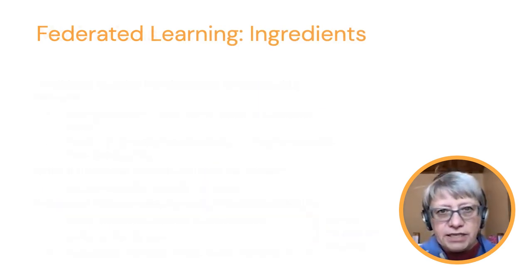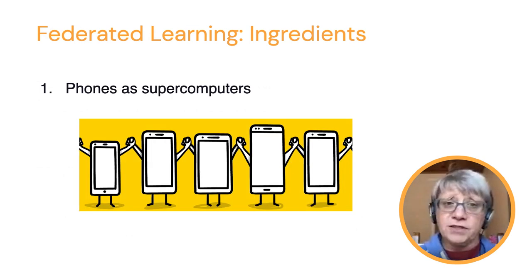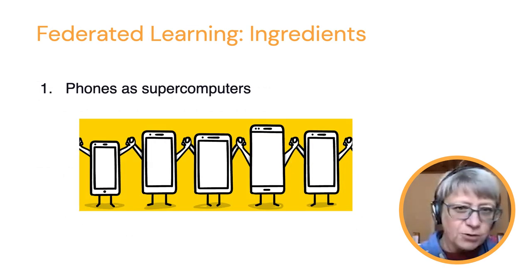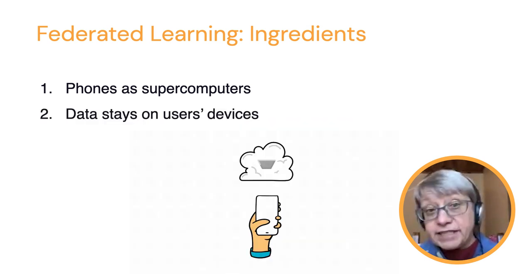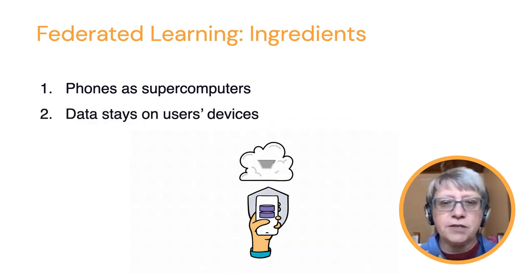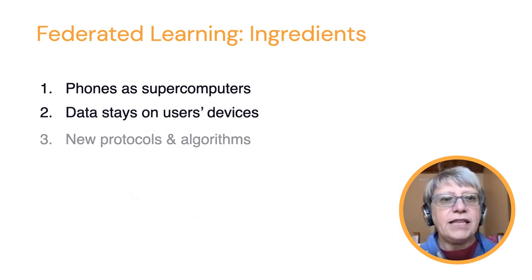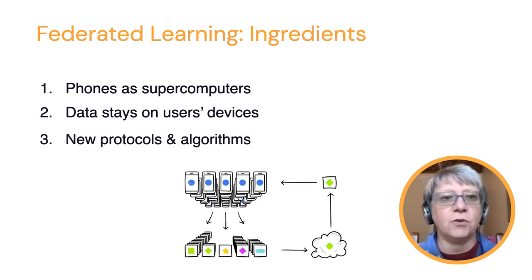What are the ingredients needed to do federated learning? First, we need phones that act as supercomputers on which we're doing computations. Then we need data — the data stays on the user's device. And then we need new algorithms and new protocols to make it all work together.